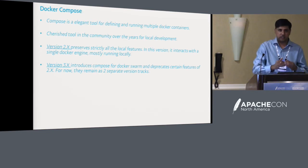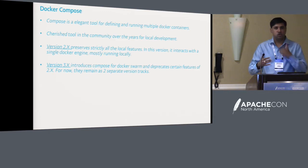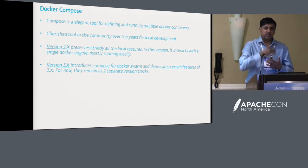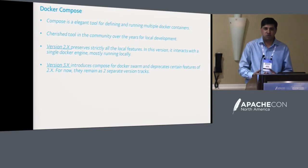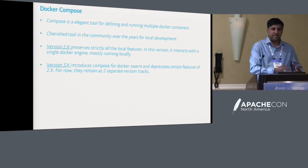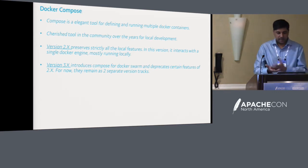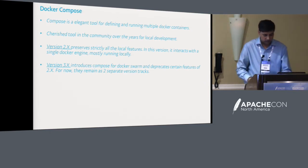Two series exist: the 2.x Compose version preserves strictly local features, while 3.x is Compose integrated with Docker Swarm for cluster management. In 3.x they introduced options like Docker Compose deploy and removed certain parameters that made sense only in a local environment — so 3.x deprecates certain features. Both 2.x and 3.x are alive, and they are working on collapsing them in some form.